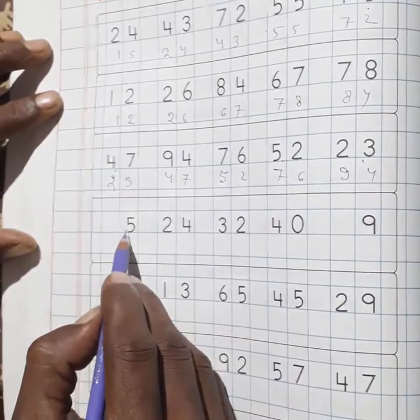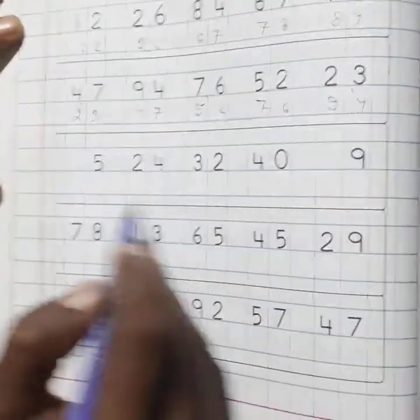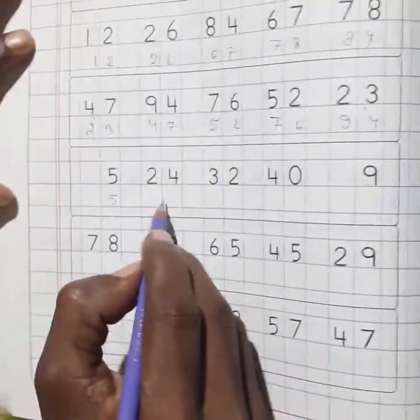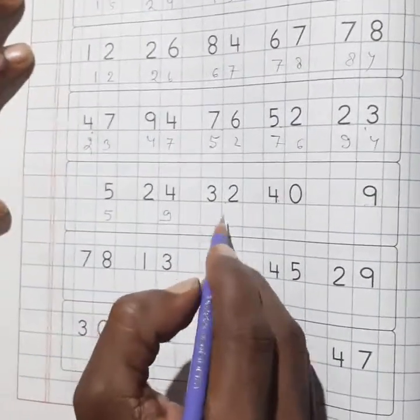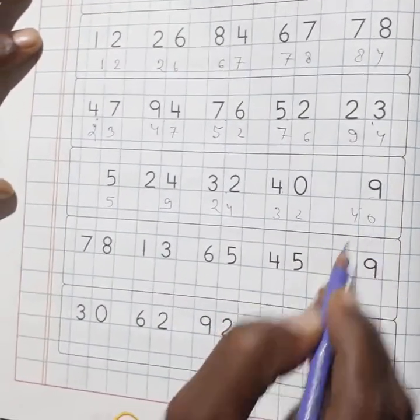Next question: 5, 24, 32, 40, and 9. Now write at first 5, then 9, then 24, then 32, and the last 40.